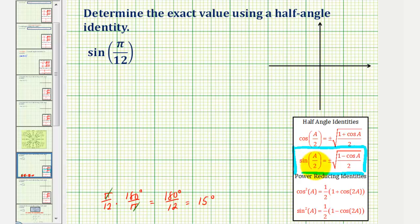So notice that a over two must equal pi over 12 radians. So if a divided by two is equal to pi divided by 12 radians, to solve for a, which we need on the right side of our identity, we would multiply both sides by two.